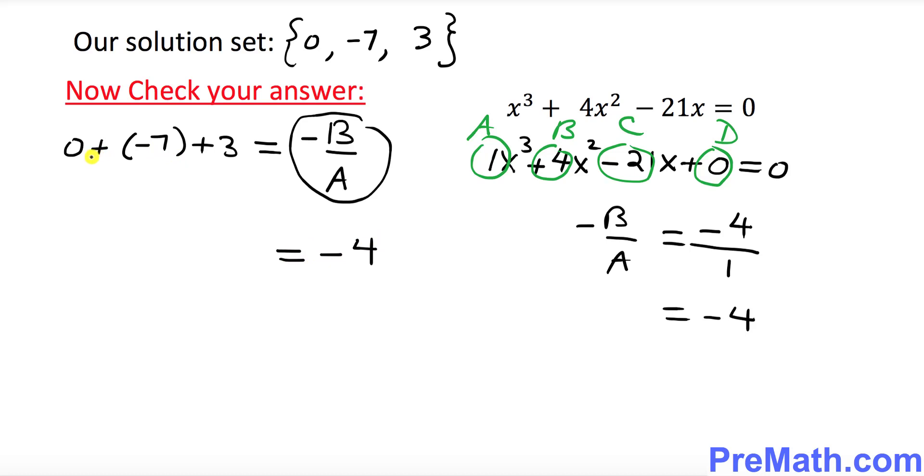And on the left hand side, if you simplify negative 7 plus 3, that's going to give us negative 4 as well. Are they both sides the same? Yes, they are. So that means indeed our answer is checked. That means our given solutions are the correct ones.